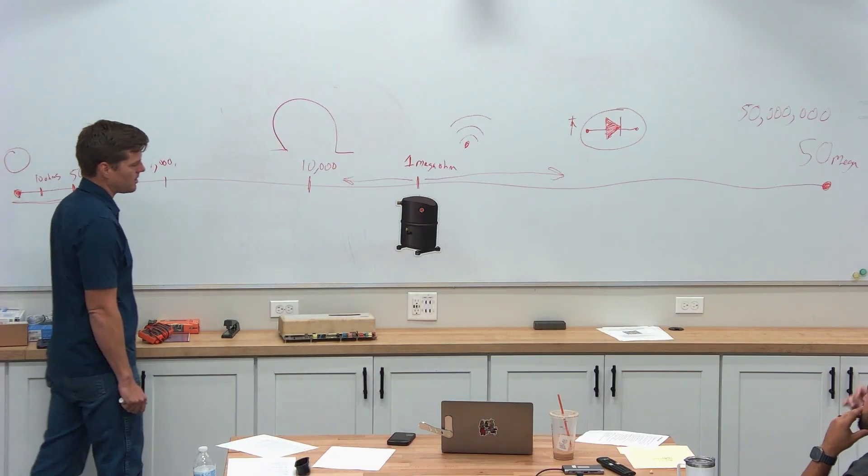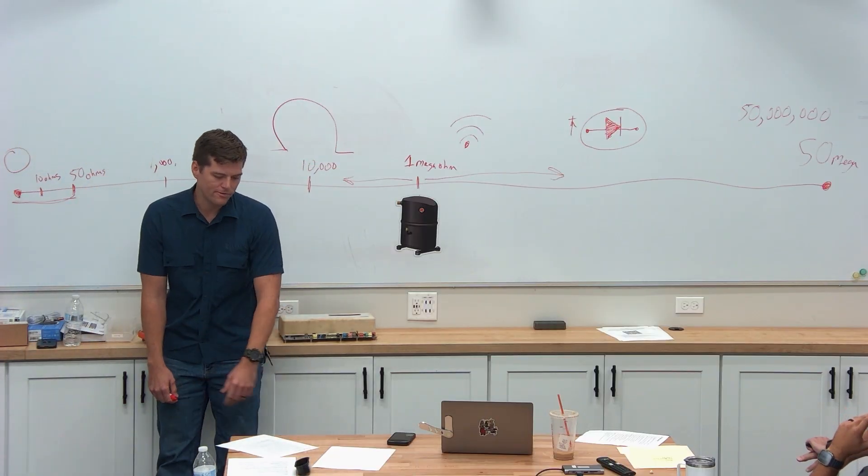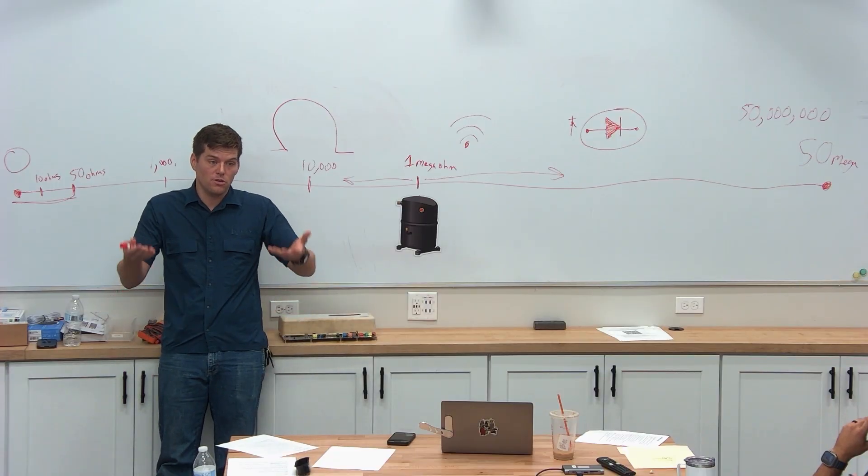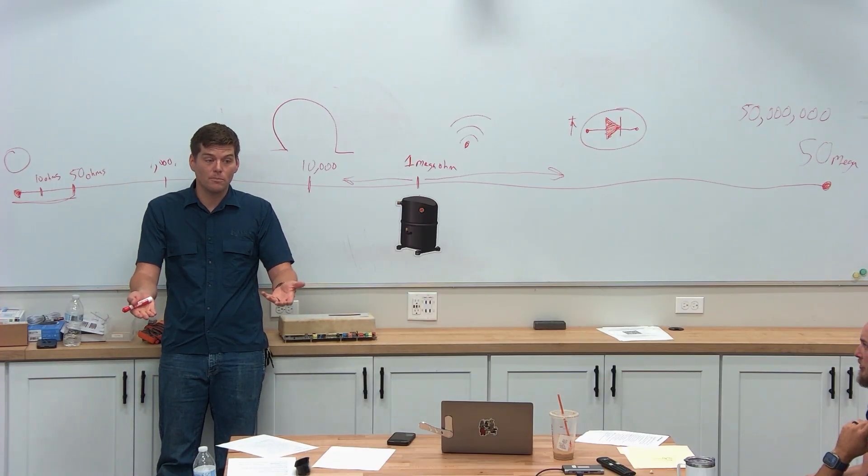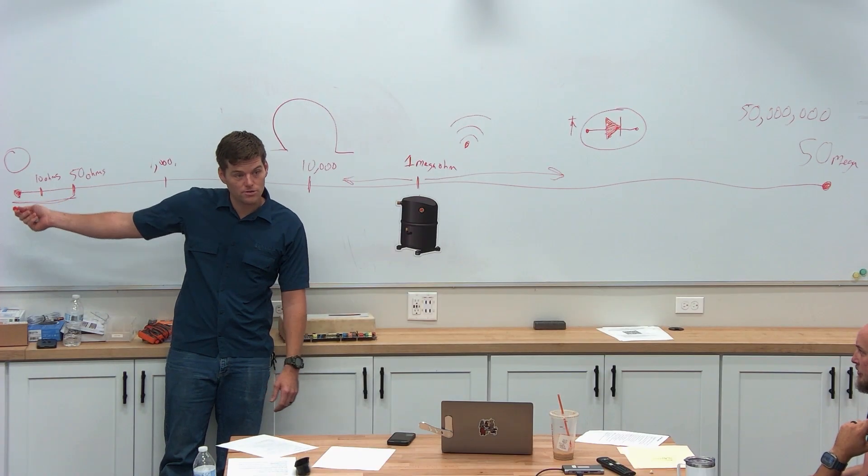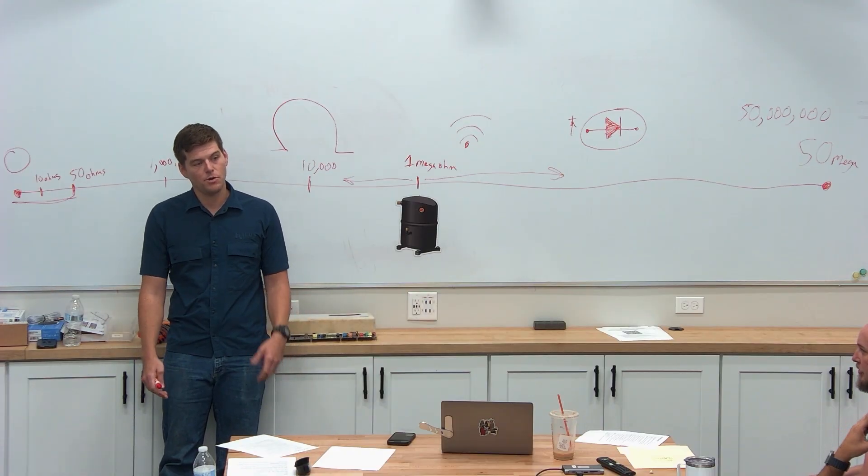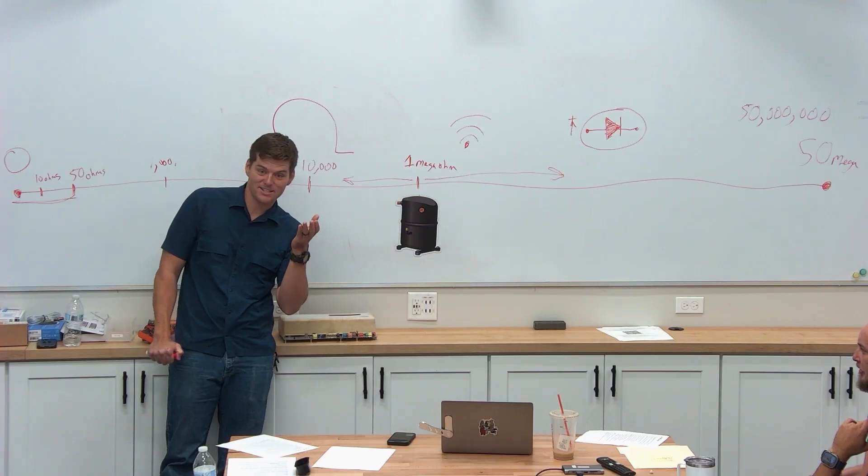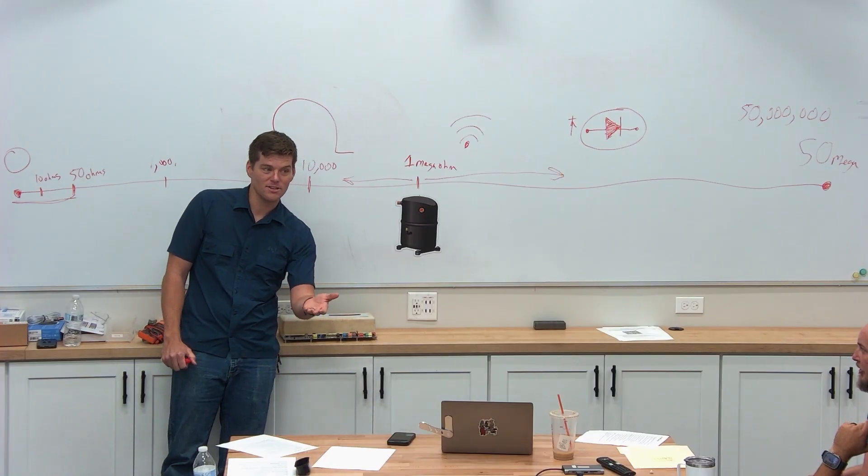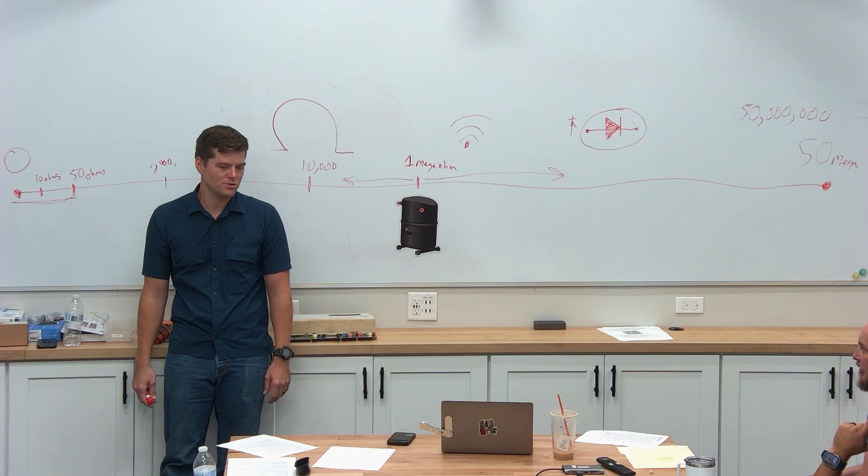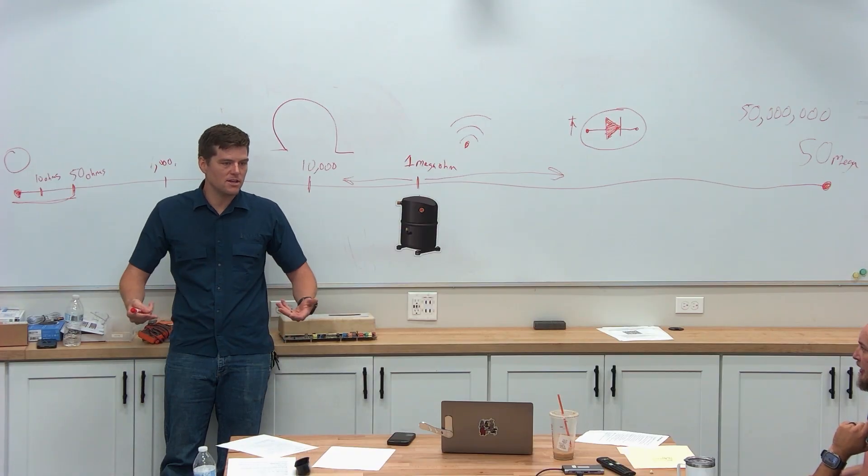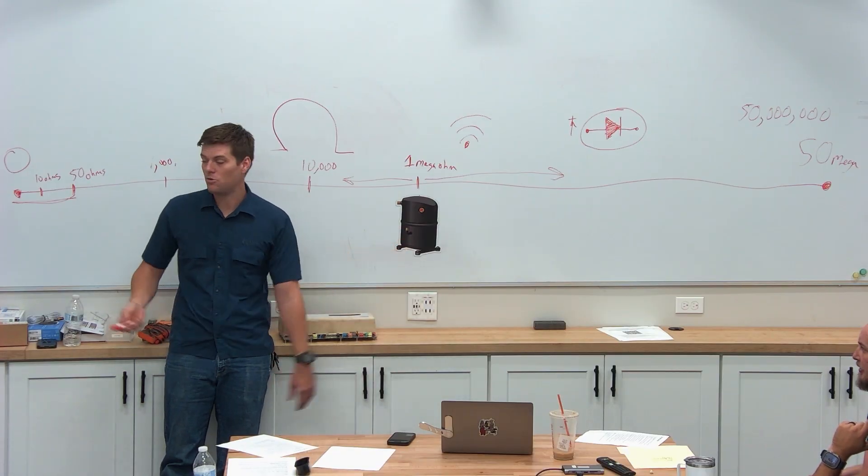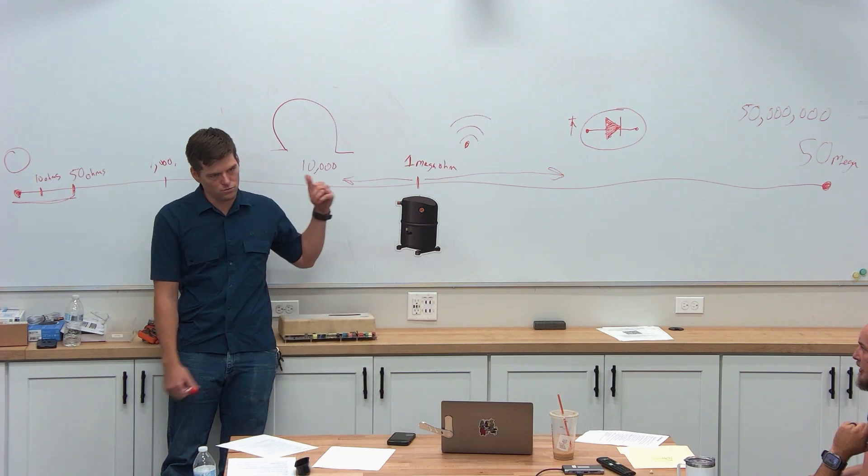We held a compressor class down in Miami. We took two compressors, one looked good and the other looked bad because we were checking with continuity. It turns out they were both bad. We put in resistance and found this one was completely grounded at 10 ohms, and the other was close to 10,000 ohms. You would have missed it if you were checking in continuity as opposed to resistance.